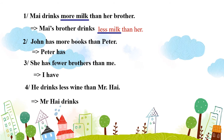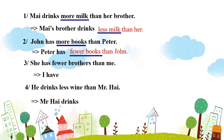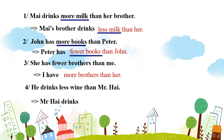Câu số 2: "John has more books than Peter." – John có nhiều sách hơn Peter. Có nghĩa là Peter có ít sách hơn John. Viết lại: "Peter has fewer books than John." Chúng ta thấy: more books đổi thành fewer books. Câu số 3: "She has fewer brothers than me." – Cô ấy có ít anh em hơn tôi. Có nghĩa là tôi có nhiều anh em hơn cô ấy. Chúng ta thấy: fewer brothers đổi thành more brothers.